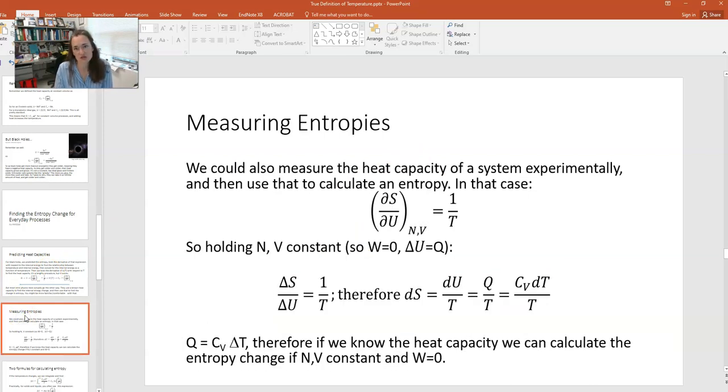We are still going to use the definition of temperature which is partial s with respect to u equals 1 over T. Now we're going to look at holding n and v constant. So we're not letting the number of particles or the volume of our system vary. Now via the first law of thermodynamics, if our volume doesn't vary, then since the work is minus PdV, if dV is zero then that means that our change in the internal energy is equal to heat Q.